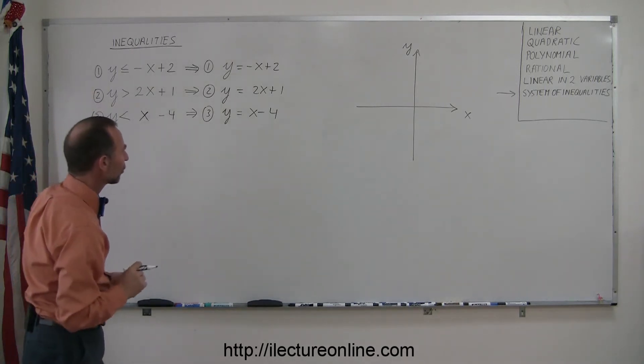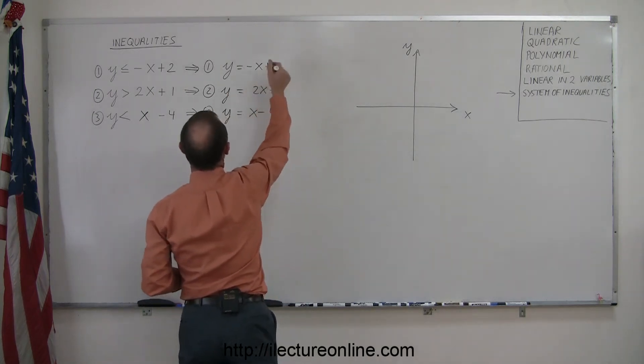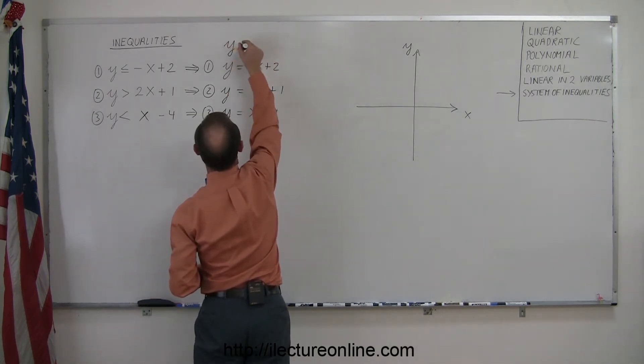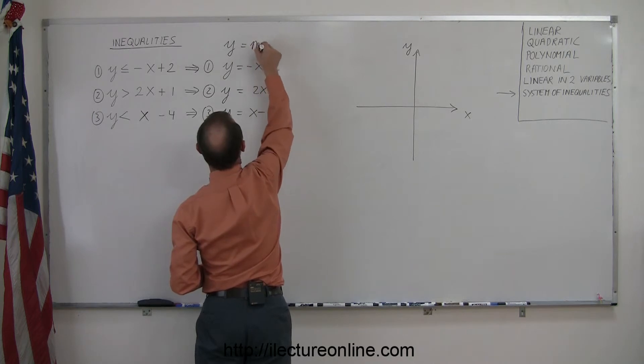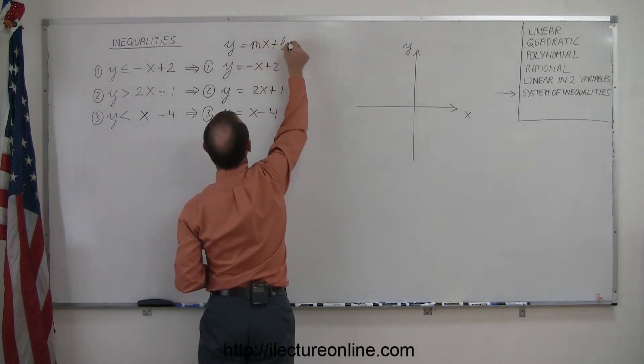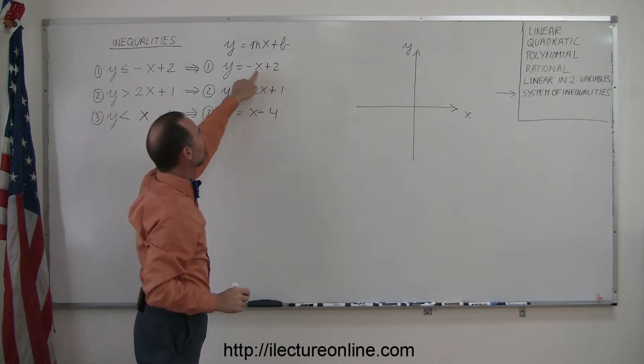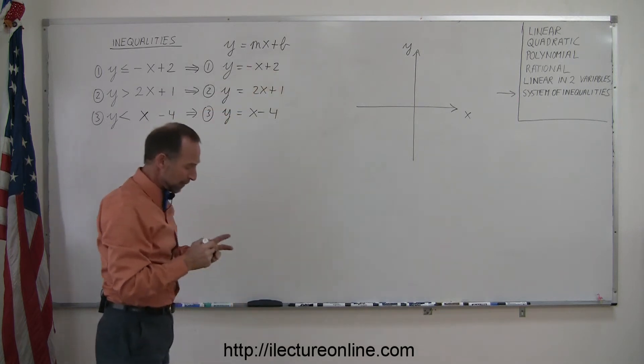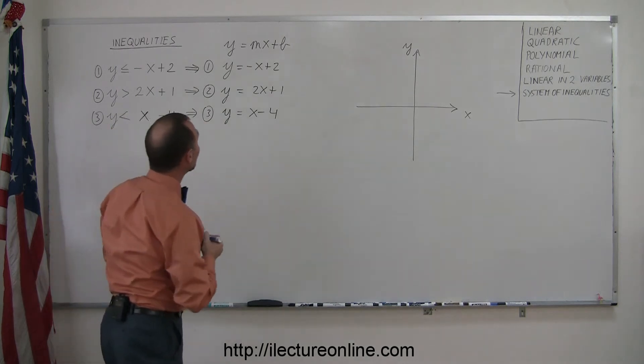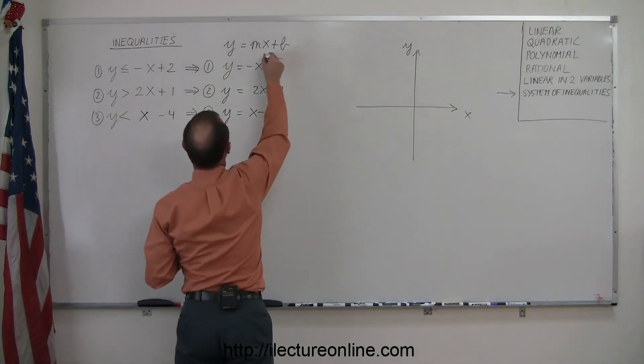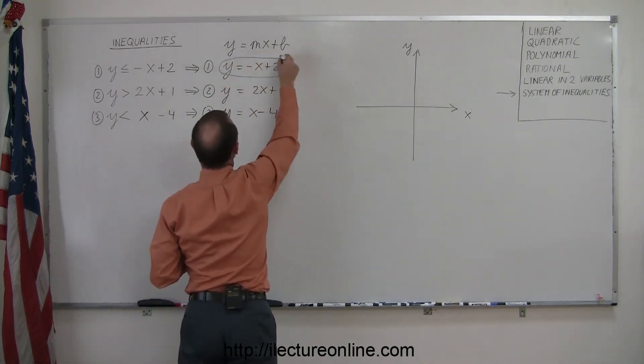So let's graph those lines. The first line, y equals minus x plus 2. Remember, this is part of the form y equals mx plus b, the slope-intercept form. In this case, 2 is the intercept, and minus 1 is the slope. To keep things easier to follow, let's go ahead and draw this line in blue.